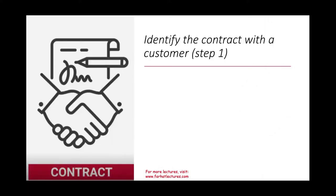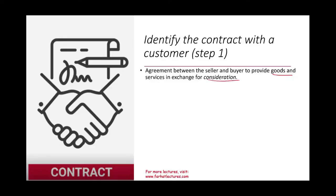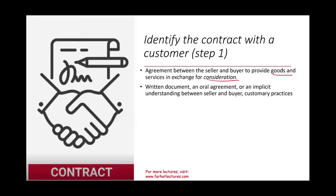A contract is an agreement between a buyer and a seller to provide goods and/or services in exchange for some consideration. The contract can be written, oral, or even implicit and customary — you don't have to have a signed contract. It could be a handshake or implied. If you walk into a store and buy something without saying anything, it's still a contract.